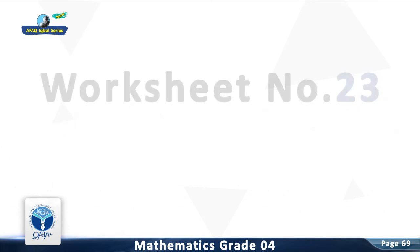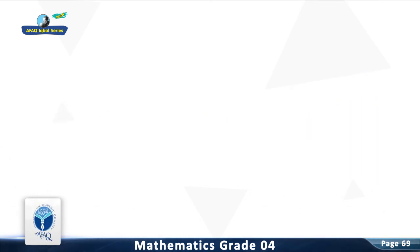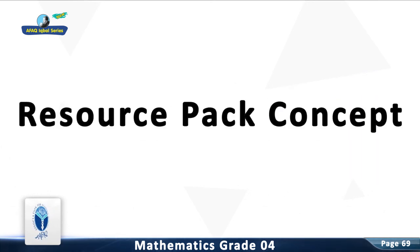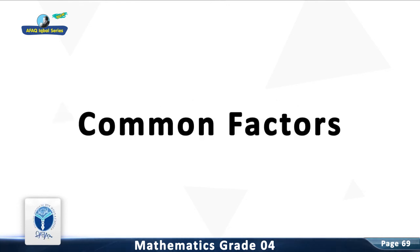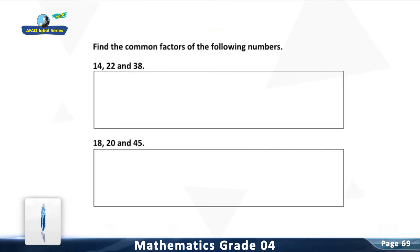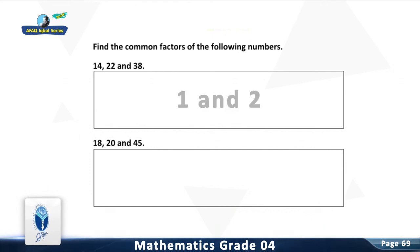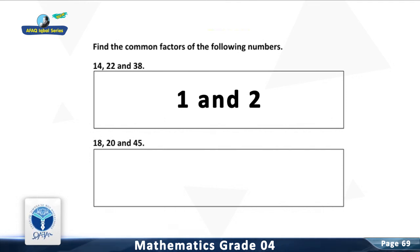Chapter 4: Factors and Multiples. Worksheet number 23. Major Concept: Common Factors. Resource Pack Concept: Common Factors. Find the common factors of the following numbers. Question 1: Find the common factors of 14, 22, and 38. You are right. The common factors of 14, 22, and 38 are 1 and 2.